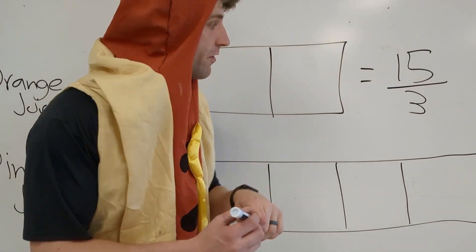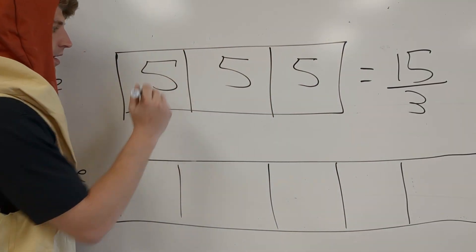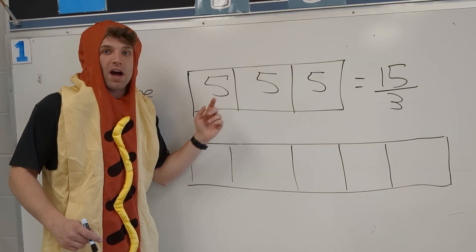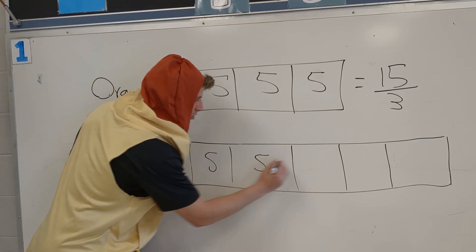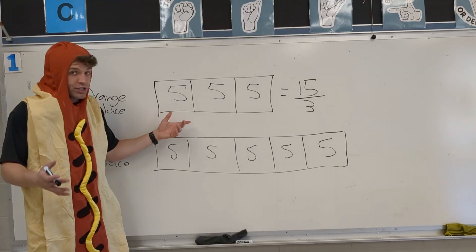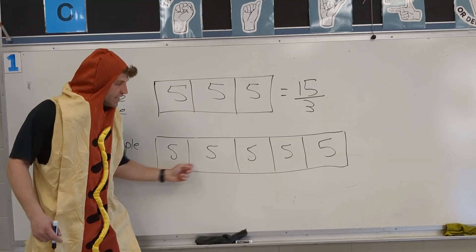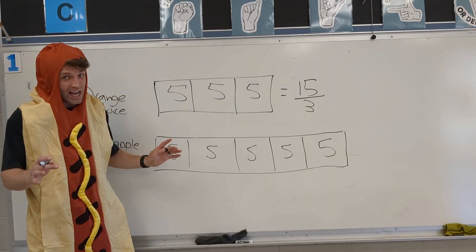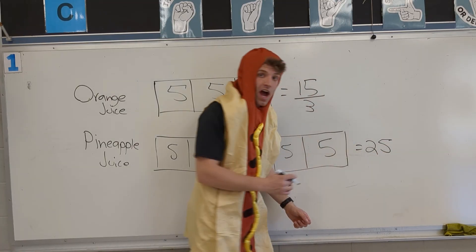15 divided by 3 gives us 5. So all we do is put 5 in each box. The awesome part about a tape diagram: once you find the value of 1 box, they all have to be equivalent. So I have to put 5 in every single box. Our tape diagram helped us break it down. Our ratio is still equivalent — still 3 to 5 — but we multiplied each side by 5. That means I will have a total pineapple juice of 25 cups. It looks like tape really does fix everything.